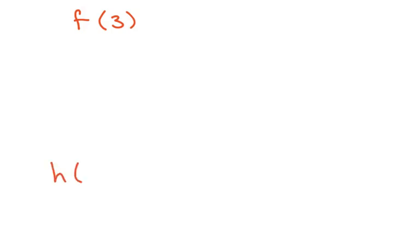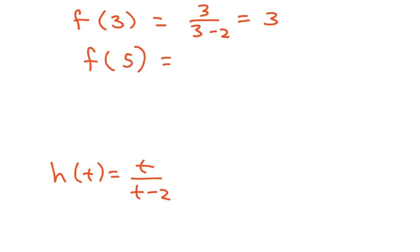So you plug in your 3, you're going to get 3 over 3 minus 2, so that equals 3. And the right endpoint is 5, so you plug that in you're going to get 5 over 5 minus 2, and that's going to give you 5 over 3.